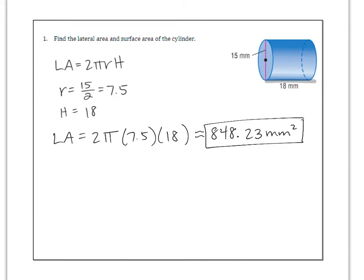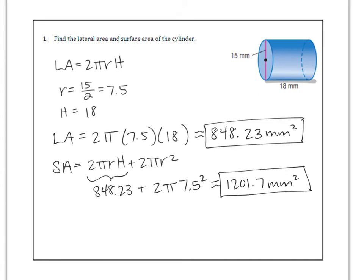Now they also want us to find surface area. To get surface area, it's 2πrh plus 2πr². Well, we already have 2πrh. That's 848.23. So then we're going to add on 2π(7.5)². Make sure that this actually works for you. You should get 1201.7 approximately. And it's a surface area and all types of areas are units squared. So millimeters squared.